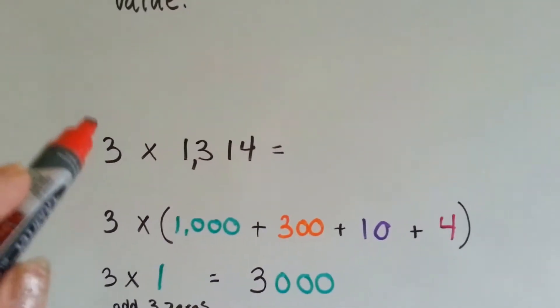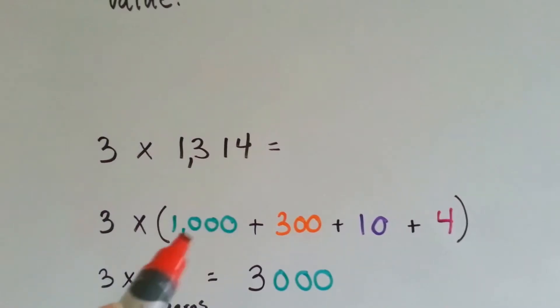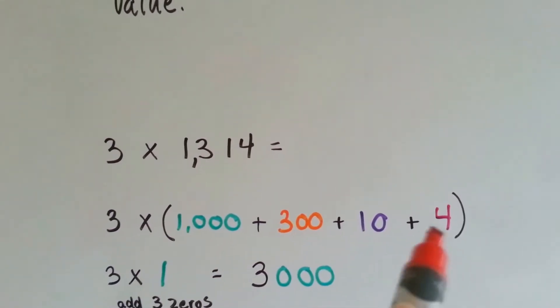Let's do this one. 3 times 1,314. So we're going to break it into 1,000, 300, 10, and 4.